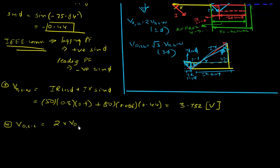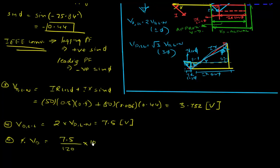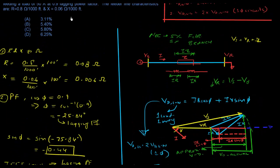Step 4: Voltage drop line-to-line for this single-phase circuit = 2 × 3.732 = 7.5 volts. Step 5: Percent voltage drop = (7.5 / 120) × 100 = 6.25%. That is the answer.